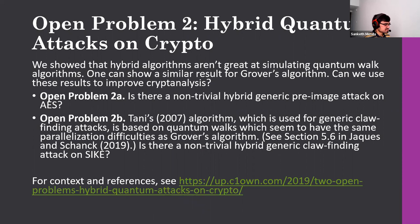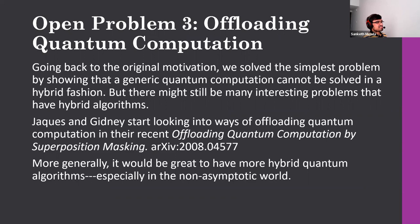Finally, going back to the original motivation: we showed the simplest case — that general quantum computation cannot be parallelized in a hybrid fashion. But there may still be many interesting problems that do have hybrid algorithms. The algorithmic side is wide open. Jack and Kerenidis, for instance, started looking into this in their paper on offloading quantum computation by superposition masking. More techniques and algorithms in the hybrid model would be valuable. That's the end — you can find this talk at the link shown.